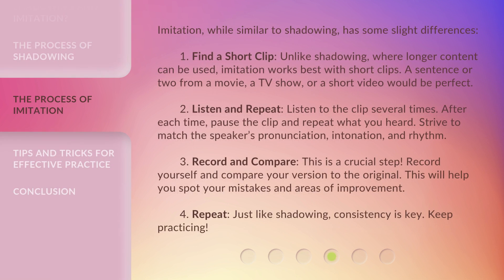Imitation, while similar to shadowing, has some slight differences. Step 1: Find a short clip. Unlike shadowing, where longer content can be used, imitation works best with short clips. A sentence or two from a movie, a TV show, or a short video would be perfect.